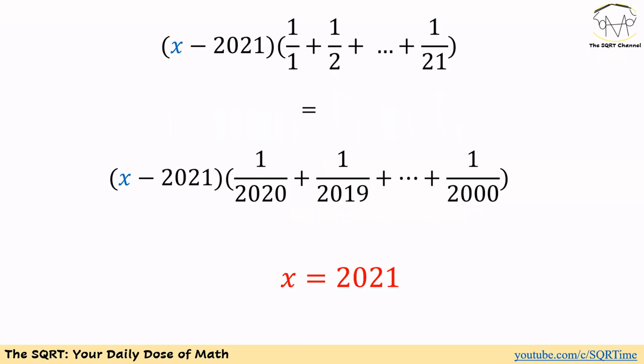Obviously the constant terms that we have on both sides of this equation are not equal, and we only have a linear equation here. So to make it happen, x minus 2021 should be 0, or x is equal to 2021. That's our final answer.